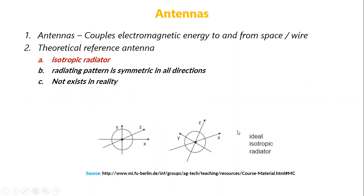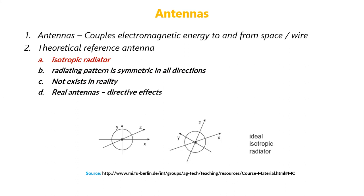This is how the isotropic radiator is represented pictorially — the antenna radiates symmetrically in all directions. Real antennas, however, have some directive effects. They don't transmit or radiate signals symmetrically in all directions; rather, they are more focused in certain directions over others. So now we will be discussing several real antennas that are available.